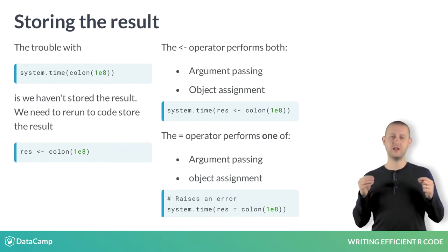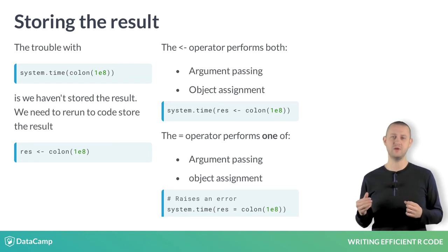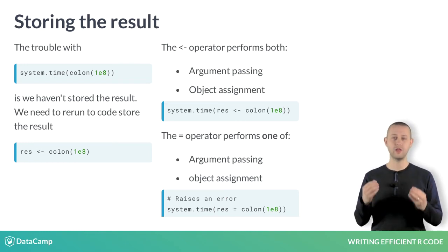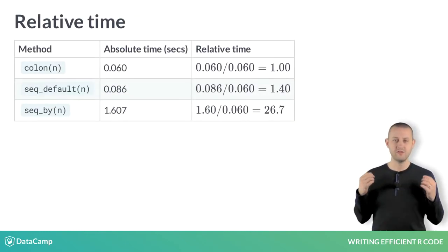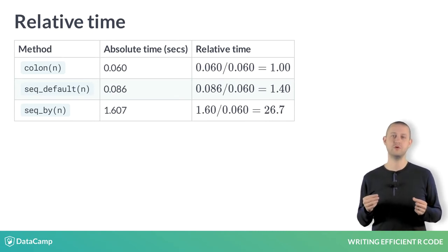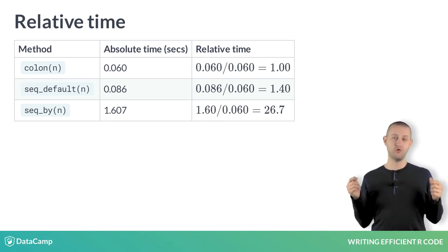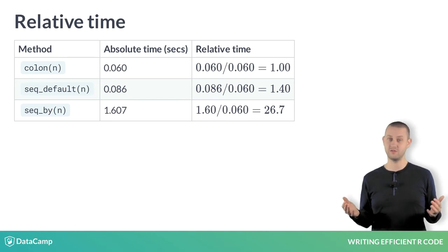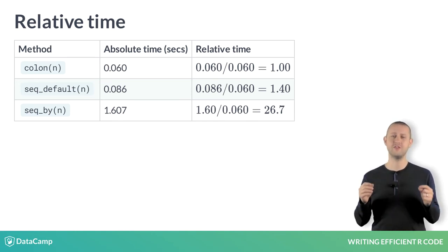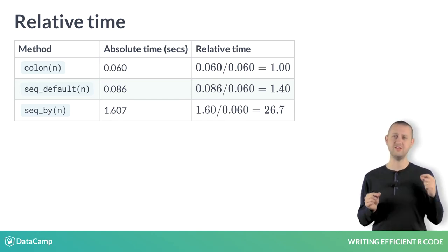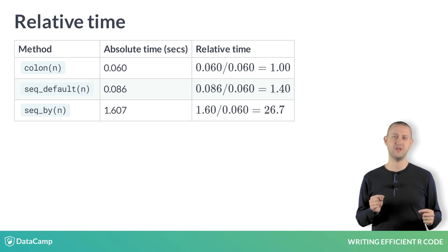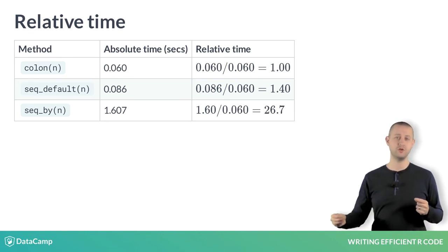As well as considering elapsed time, it's worth calculating the relative time. This is simply a ratio. So in this example, the elapsed times are 0.06 and 1.6 seconds — the relative time is therefore 26. That is, the seq_by function is 26 times slower than the colon function.